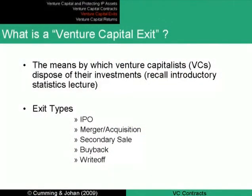So what exactly are these exits? We have five main ways in which venture capitalists can exit their investments: first, through an initial public offering; second, an acquisition or merger; and third, secondary sales, where the venture capitalist sells his or her investment but the entrepreneur retains their ownership stake in the company. Fourth are buybacks, where the entrepreneur essentially repurchases the interest from the venture capitalist.